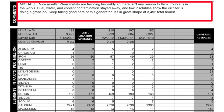On this last report, iron went down to 56 — actually dropping one from the previous. Their comments were: 'Michael, nice results. Wear metals are trending favorably, so there isn't any reason to think trouble is in the works. Fuel, water, and coolant contamination stayed away, and low insolubles showed the oil filter is doing a great job. Keep taking great care of this generator — it's in great shape at 34.92 total hours.' That final comment made me feel very, very comfortable about the iron levels. I knew I was running the generator differently over that period, so I expected something, but having Blackstone and their expertise analyze this is really a great thing.